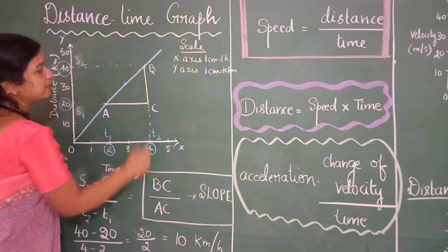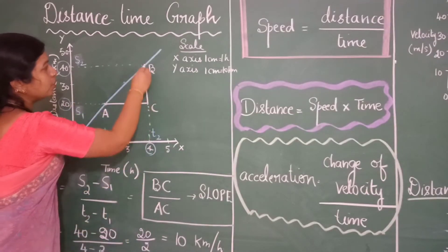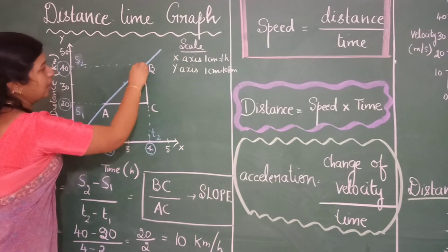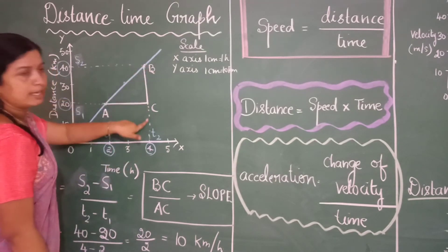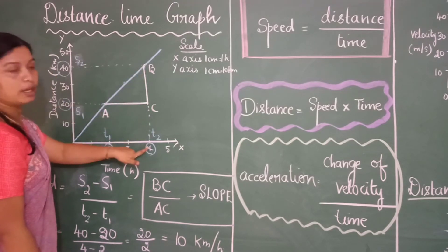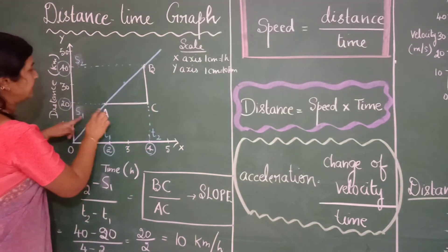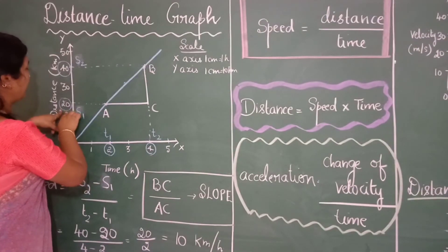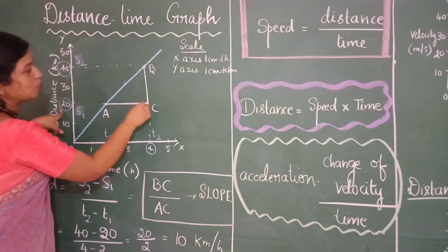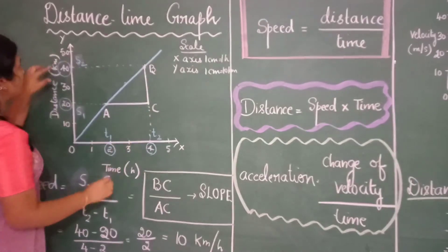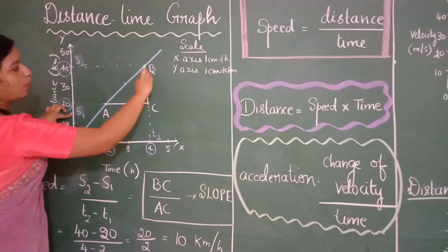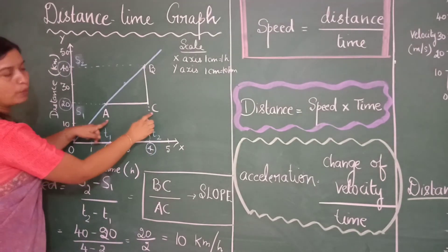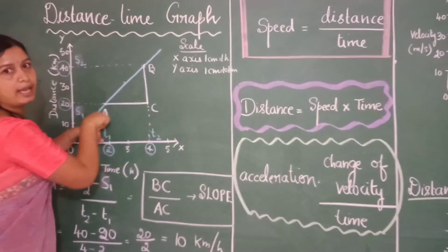And then the final distance was b. So if you just extend this line from b to the time axis and extend another line from a perpendicular to the distance axis you will get a point c. So s2 minus s1 will be equivalent to bc and t2 minus t1 will be equivalent to ac of this triangle abc.